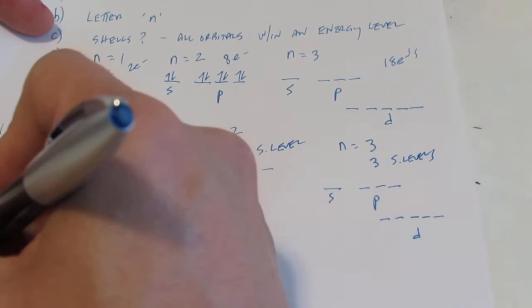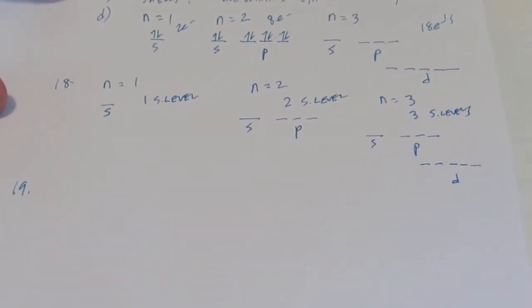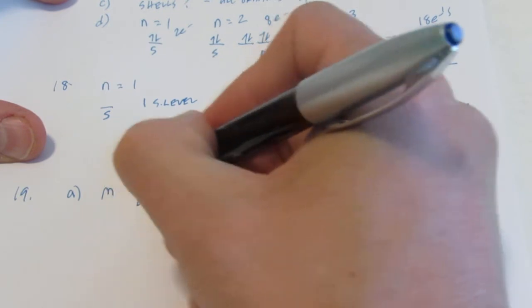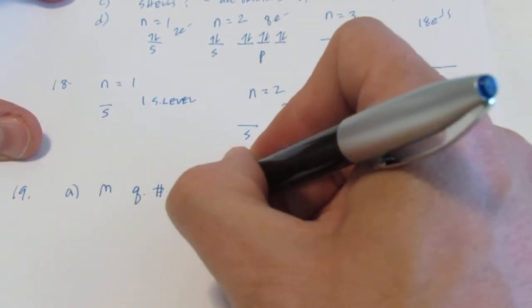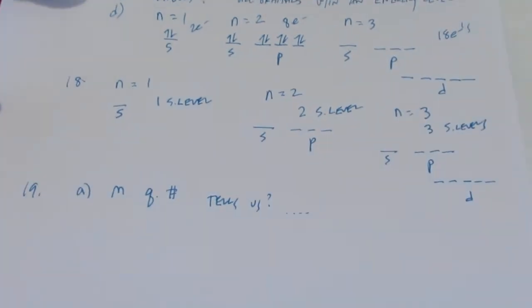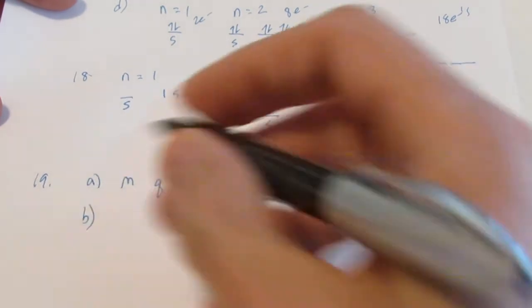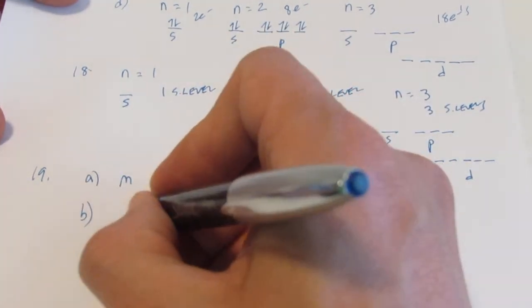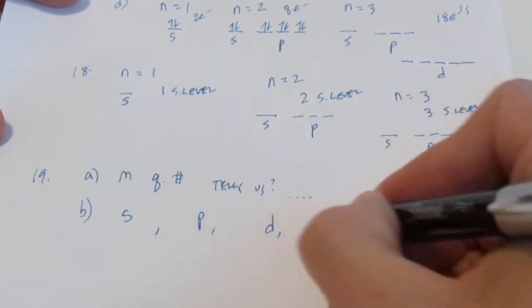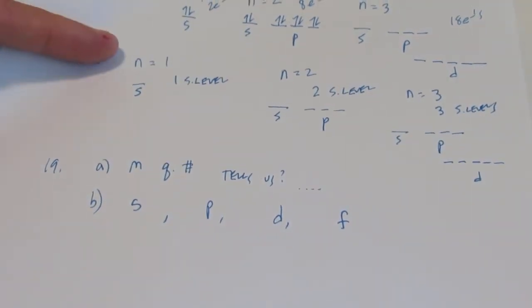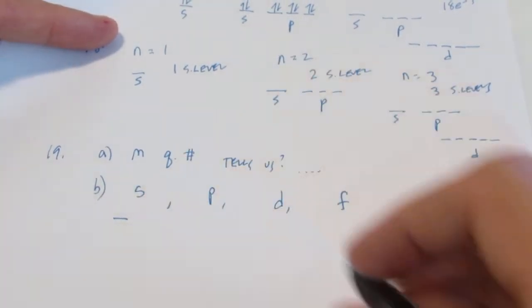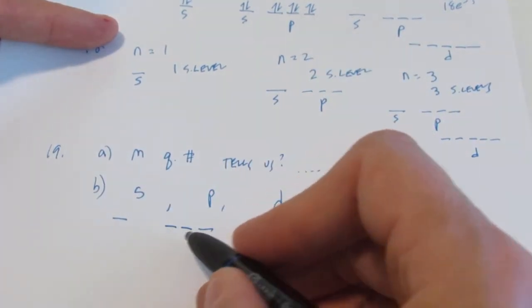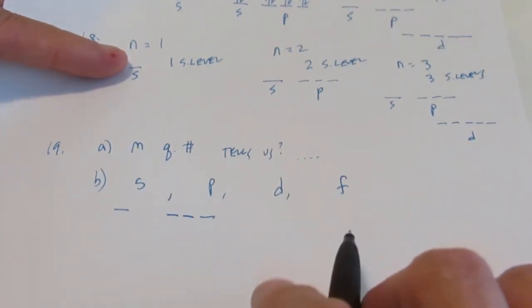Okay, the next question is number nineteen. So question number nineteen reads, what information is given by the magnetic quantum number? Now that's the M quantum number. So what does that tell us? I'm going to let you guys do that one by yourself. Okay, part B of number nineteen. That says, how many orbital orientations are possible for each of the following sublevels? An S, a P, a D, and an F. Well I've already alluded to most of these, but let's do them anyway. How many orbitals are there for an S? Correct, only one. How many for a P? Correct, three. Negative one, zero, and positive one. For a D and an F, you're on your own. You can do it.